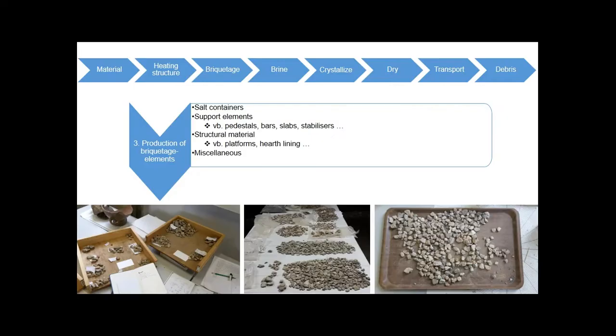This technique could theoretically be divided into eight production stages, going from the construction of the salt-making infrastructure to the production of brine and the crystallization of the salt. This salt was then transported to the market where it was distributed.